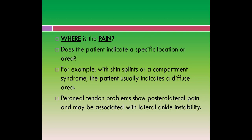We have to ask the patient where the pain is located. Does the patient indicate a specific location or a diffuse area? For example, with shin splints or compartment syndrome the patient usually indicates a diffuse area, while peroneal tendon problems show posterolateral pain and may be associated with lateral ankle instability. The location of the pain can help us arrive at a proper diagnosis.